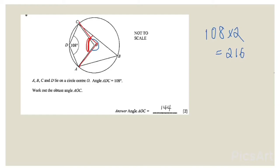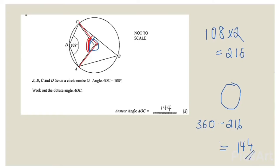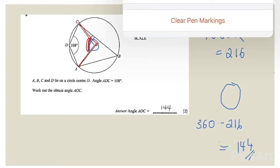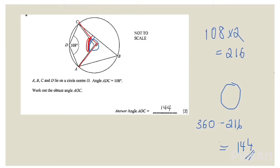So 216 is the reflex part. But we have to find the other angle — this one over here. We know the full circle is 360 degrees, so we do 360 minus 216, which gives a value of 144 degrees. So the answer to this question is 144 degrees.